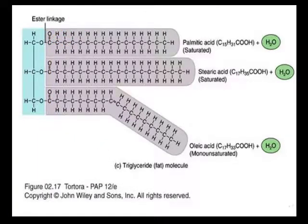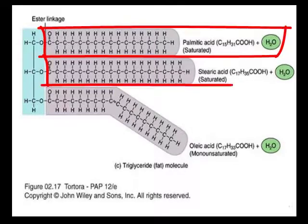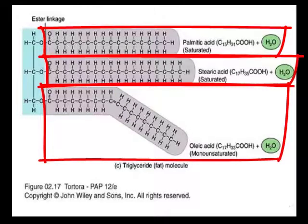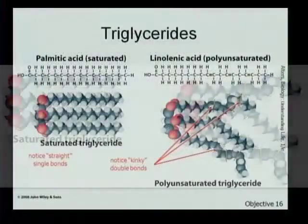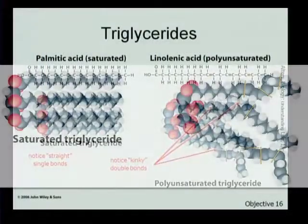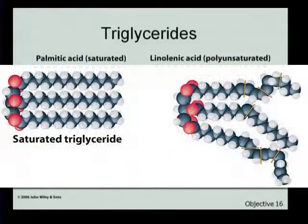The glycerol moiety has taken on three fatty acid tails through a process of dehydration synthesis in each case. This is showing an example of a glycerol molecule with three fatty acid tails on it, so we're going to call that a triglyceride. Here are a couple of examples of a triglyceride. Triglyceride 1 is a fully saturated triglyceride. It comes from palm oil, and so it's called palmitic acid.